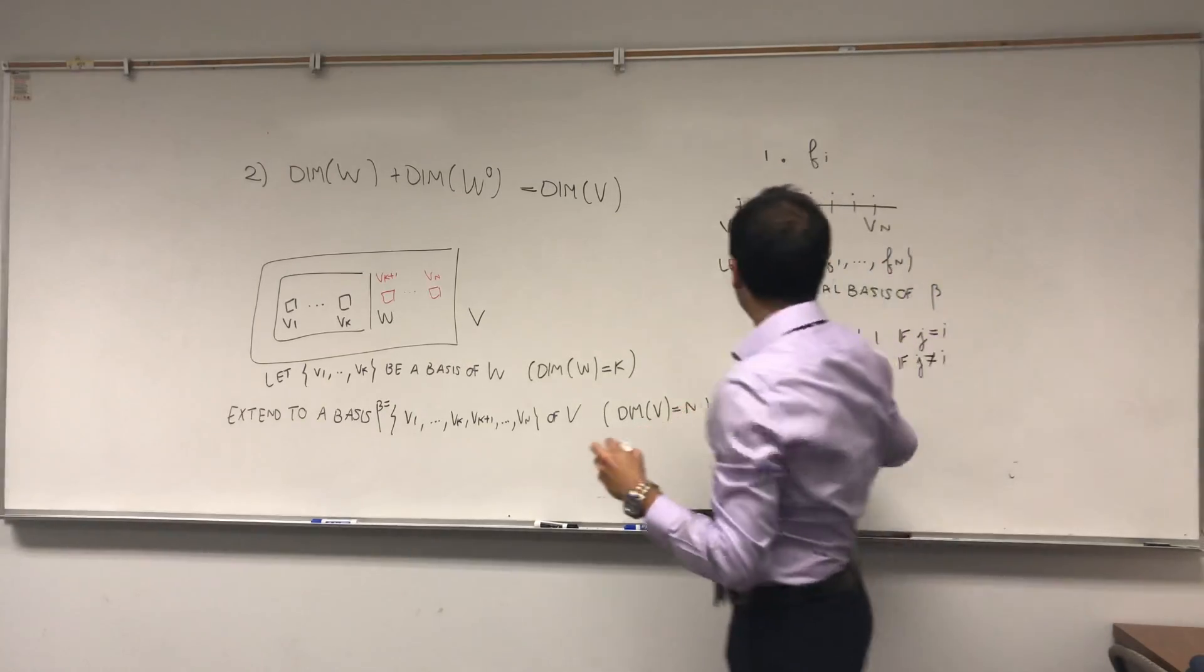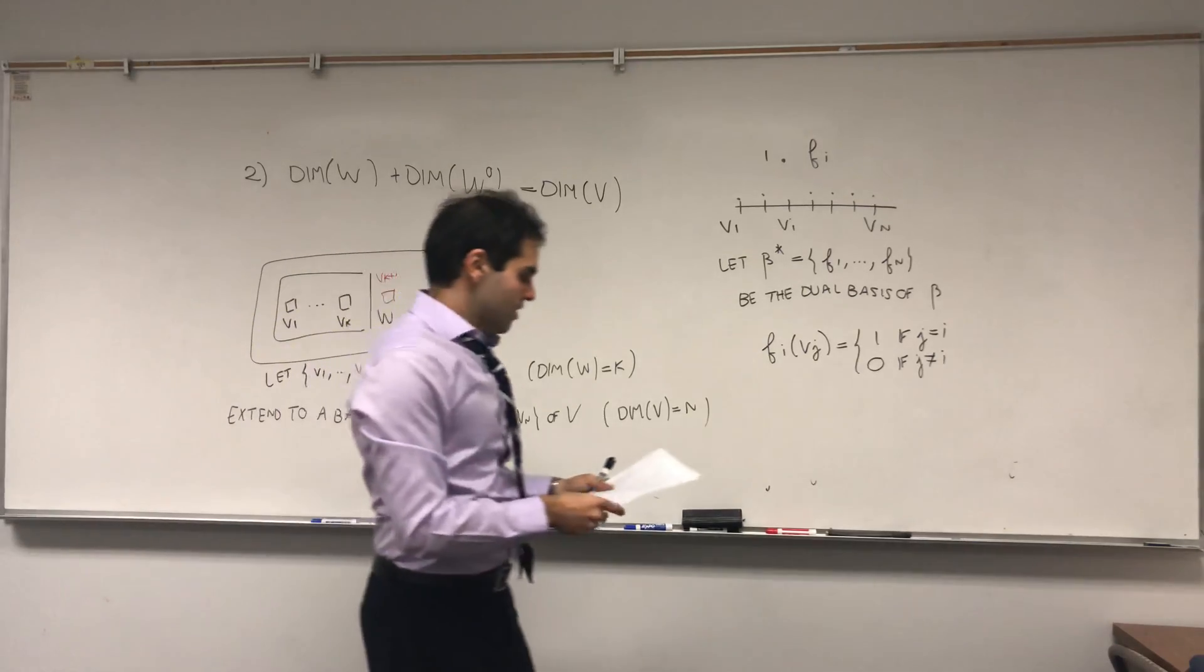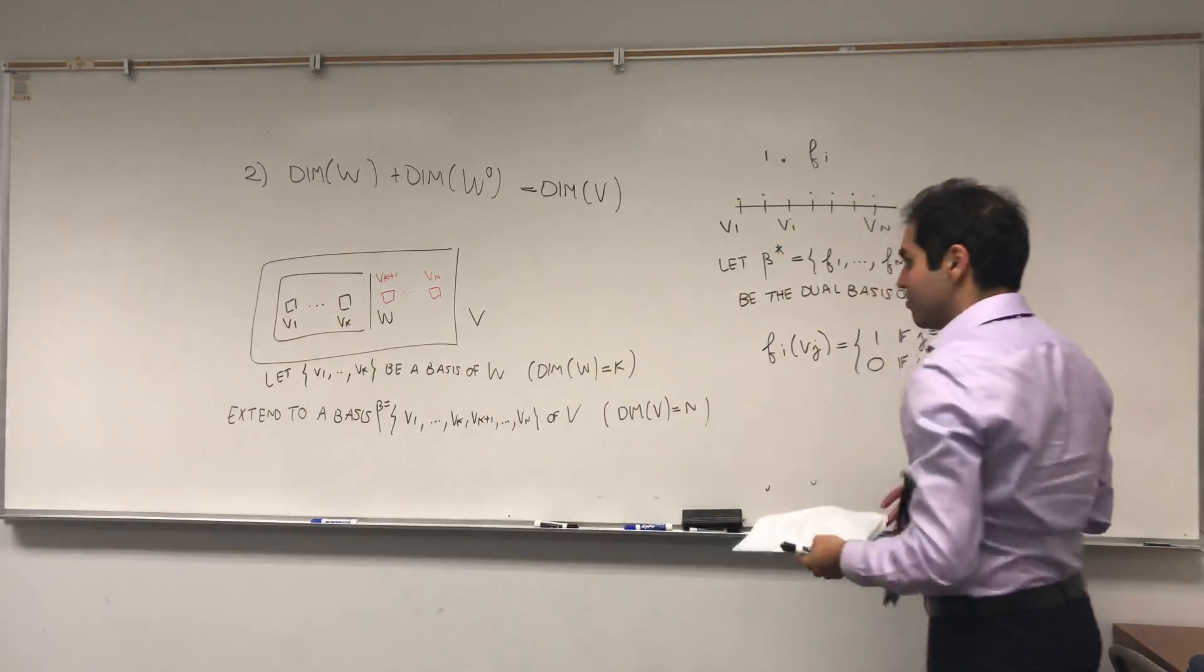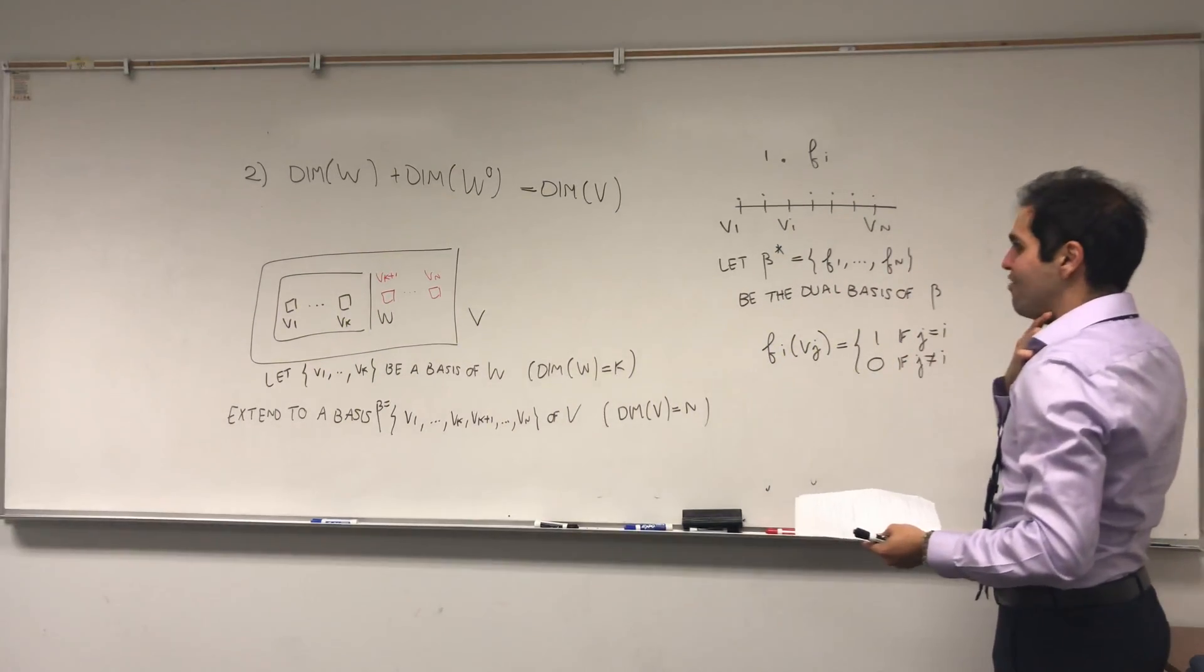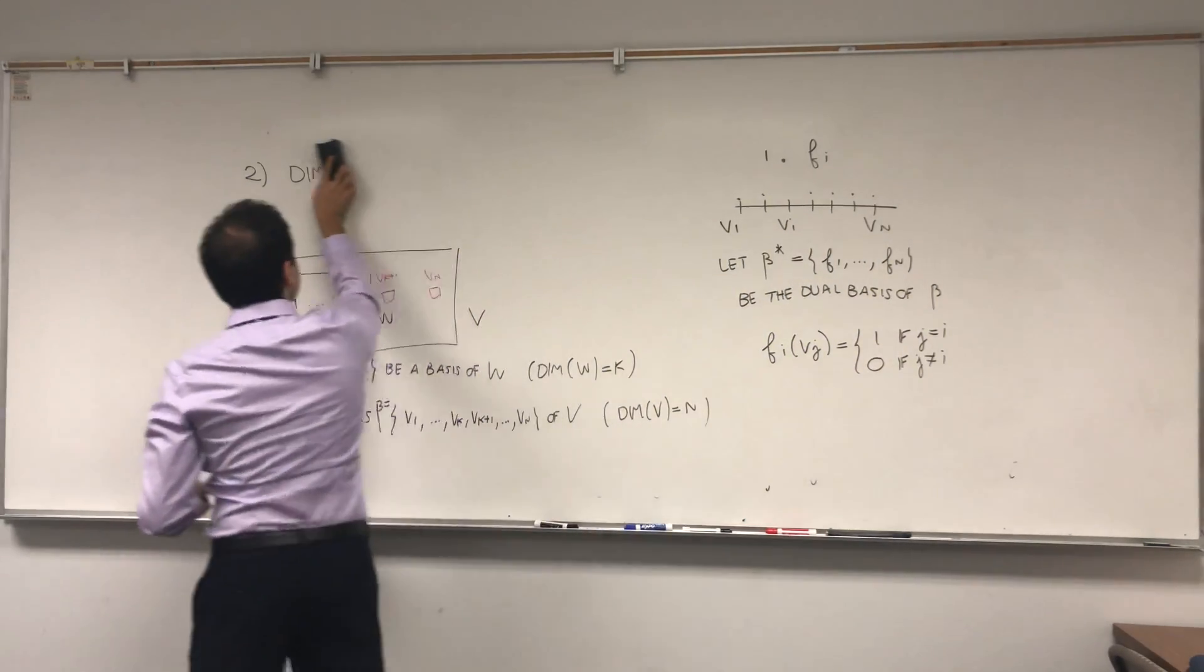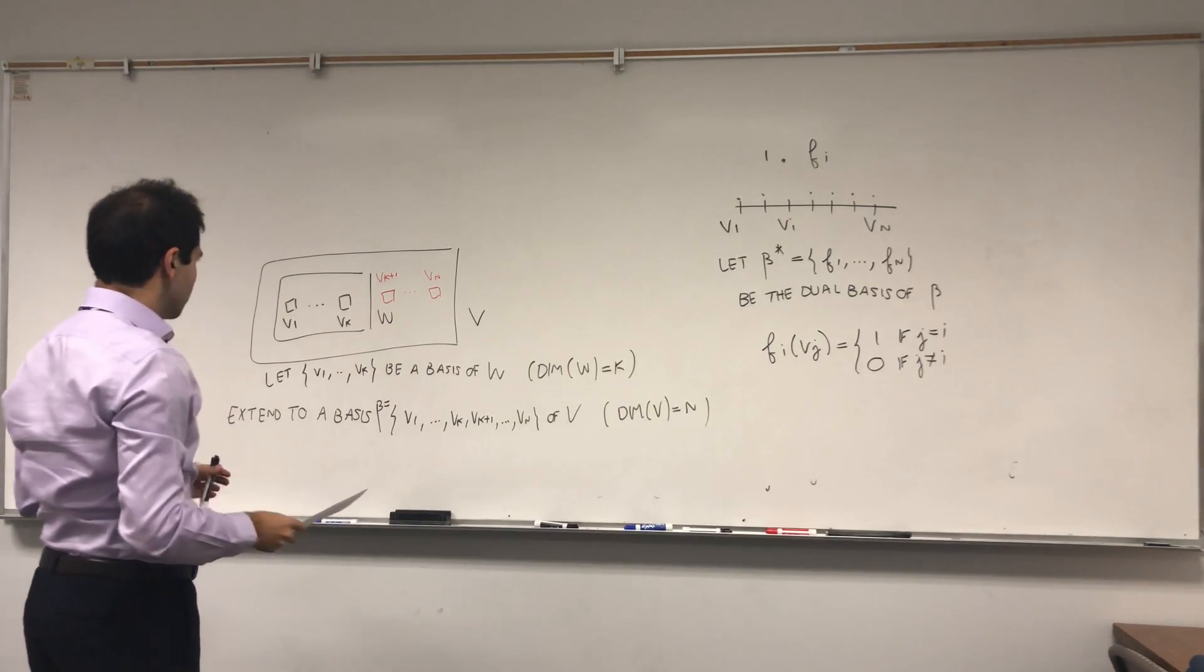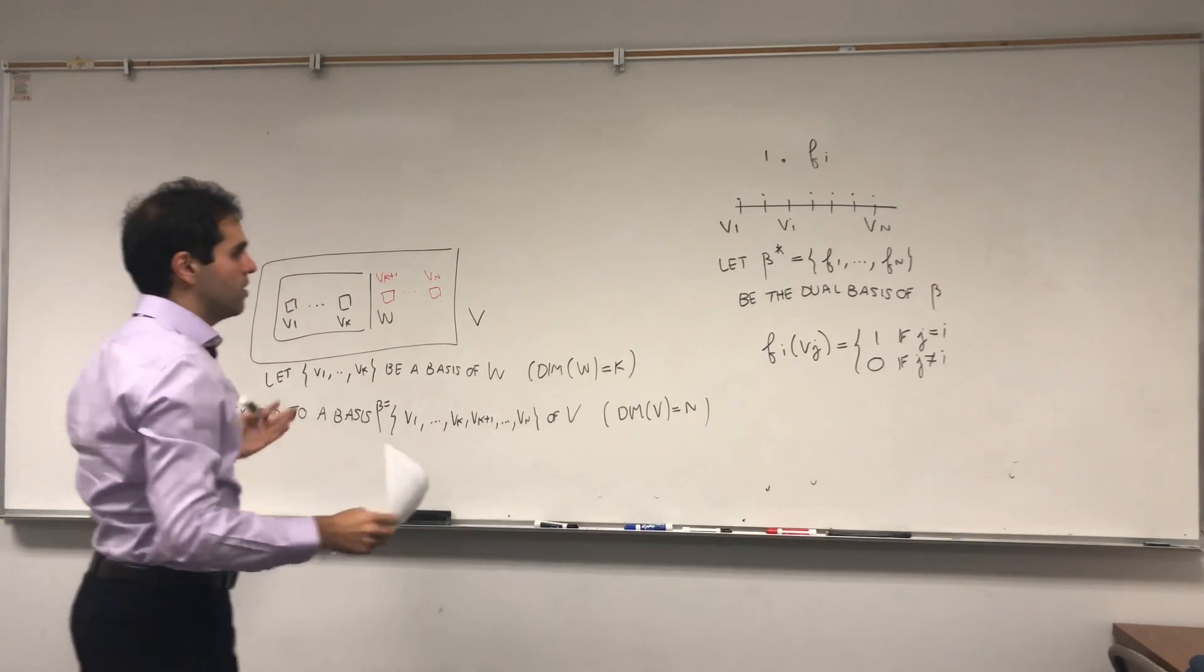And what does that mean? It simply means functions, so v1 up to vn, functions Fi such that Fi is one here and then zero everywhere else. In other words, Fi(vj) equals one if j equals i, and zero otherwise, so if j is not equal to i. So if the indices match, it's one, else it's zero.